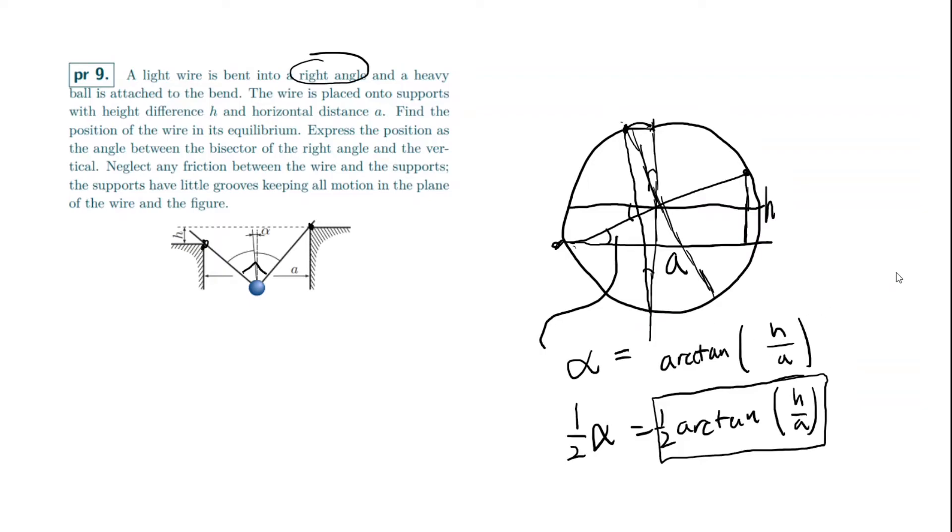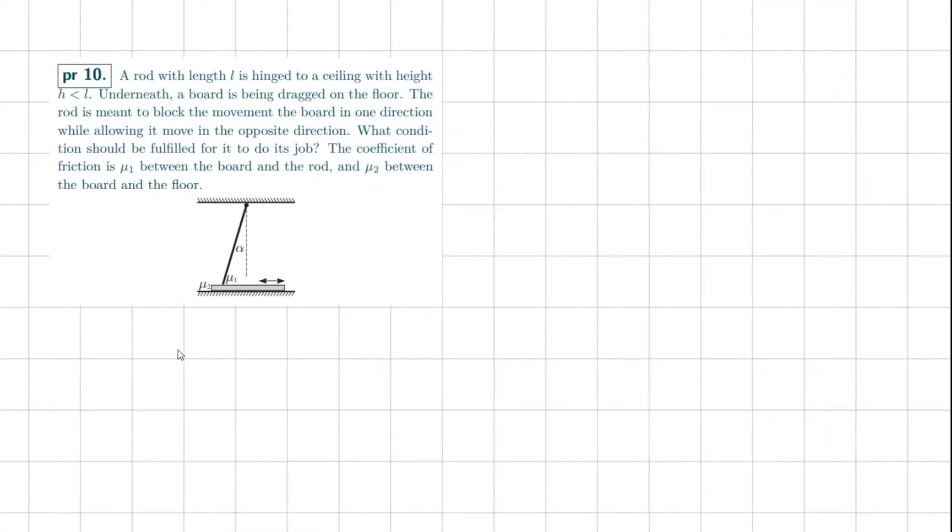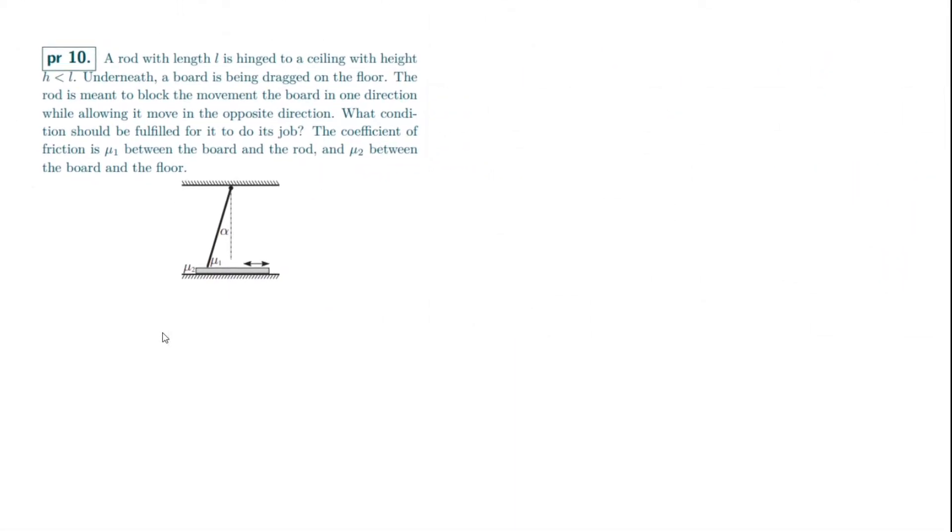Let's move on to problem number 10. A rod with length l is hinged to a ceiling with height h less than l. Underneath, a board is being dragged on the floor. The rod is meant to block the movement of the board in one direction while allowing it to move in the opposite direction. What condition should be fulfilled for it to do its job? The coefficient of friction is mu one between the board and the rod and mu two between the board and the floor.